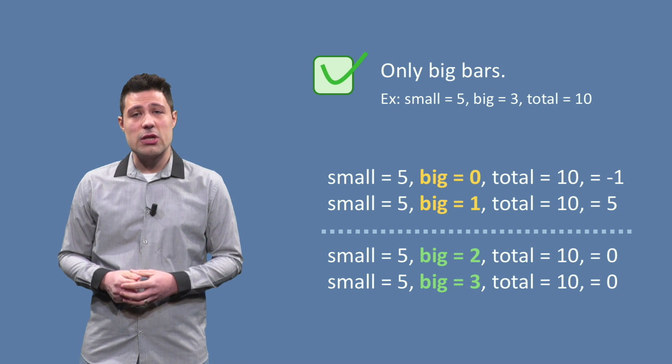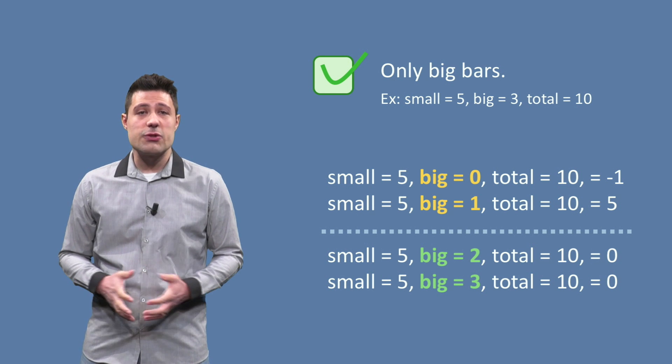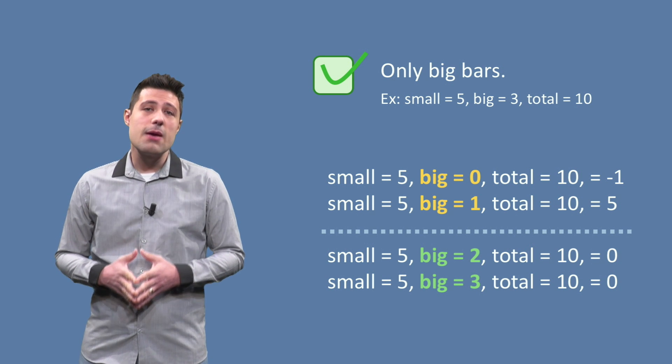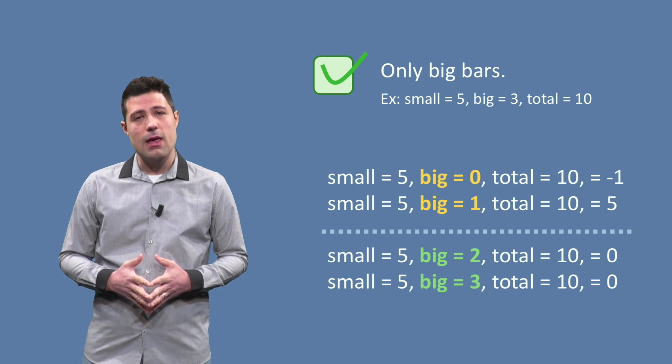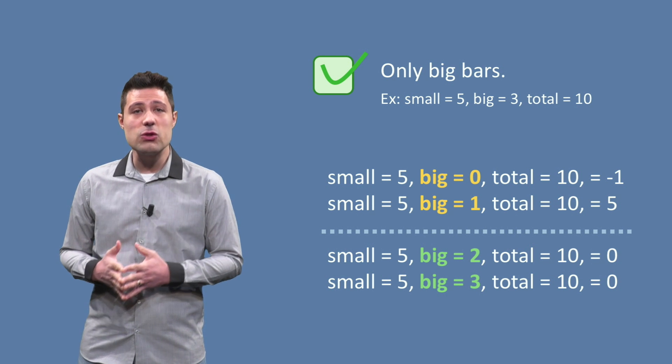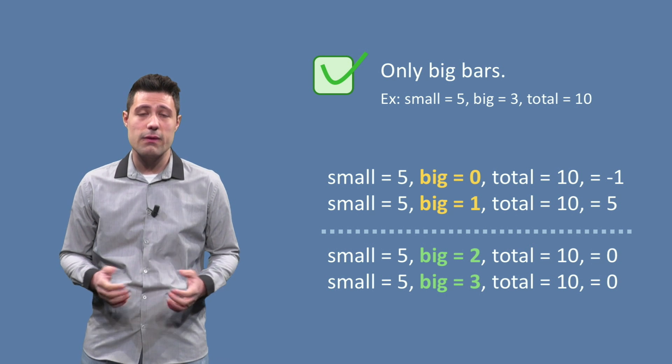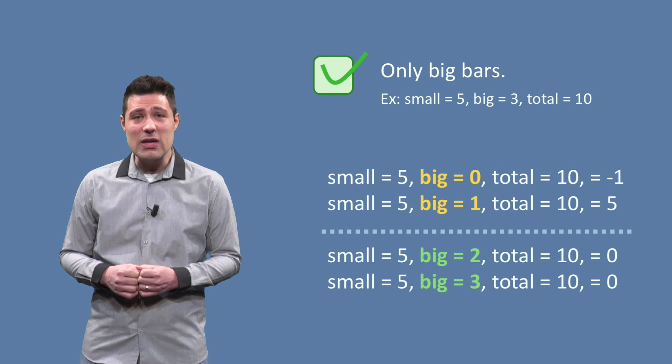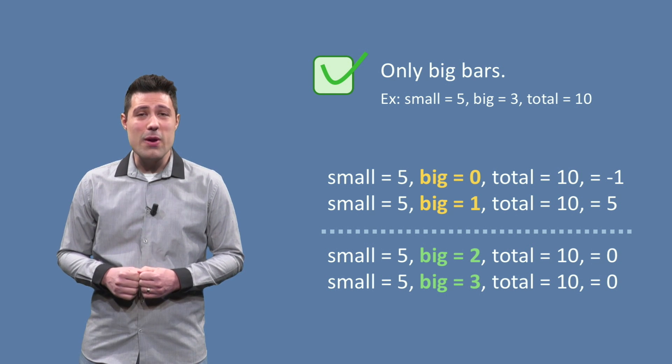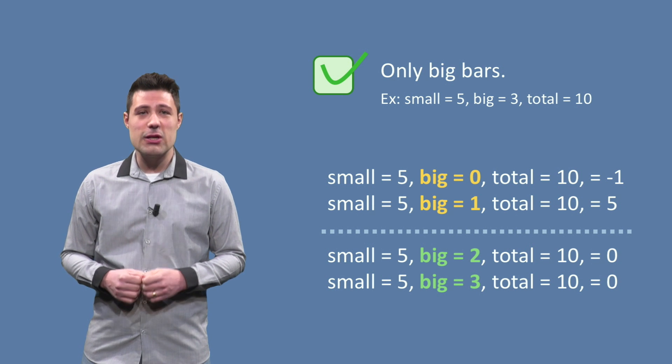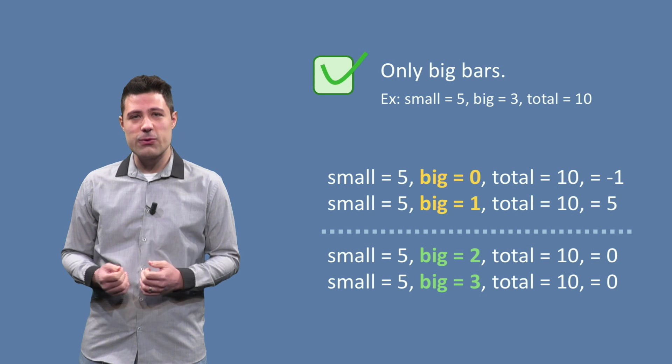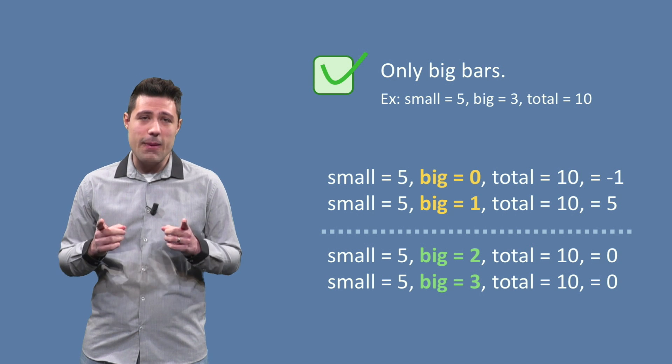For the next partition, no need for small bars, we have as a particular instance, small equals 5, big equals 3 and total equals 10. If we keep small equals 5 and total equals 10 as starting point, we then see that the boundary happens when big is in between 1 and 2. When big is precisely 2, there is no need for small bars. When big is smaller than 2, there is a need for small bars. That is the boundary.